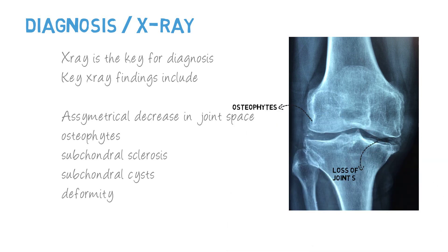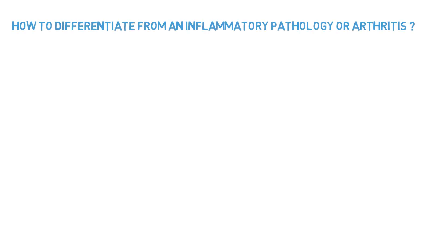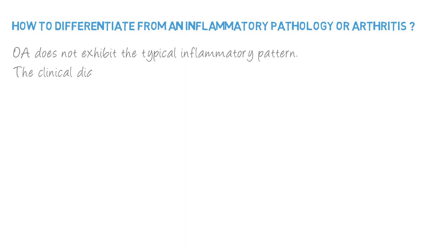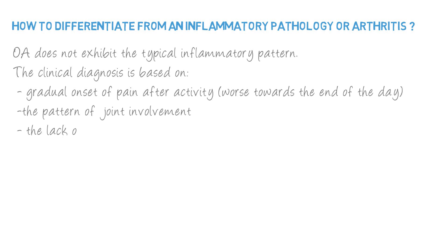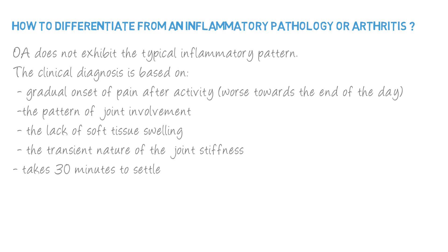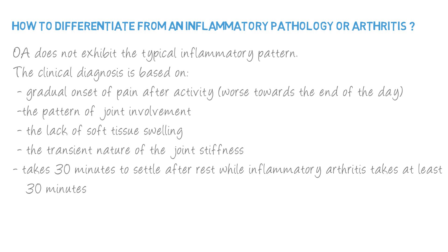It's very important to differentiate osteoarthritis from inflammatory arthritis. Osteoarthritis doesn't exhibit the typical inflammatory pattern — clinical diagnosis is based upon gradual onset of pain after activity, worse towards the end of the day. Big joints like hip and knee are usually involved in osteoarthritis, whereas rheumatoid arthritis usually involves small joints of the wrist and hand. Soft tissue swelling is not as prominent, and joint stiffness lasts for only a short time in OA.